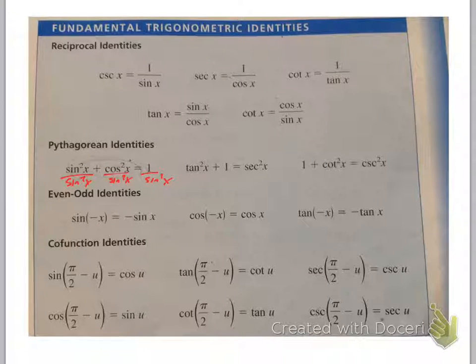What do you think happens if I divide them all by cosine? I'm going to end up with tangent squared because it would be sine over cosine. Cosine divided by cosine is one, and one over cosine is secant. So I end up with the second one if I divide them all by cosine. So if I remember sine squared x plus cosine squared x equals one, you're in good shape.